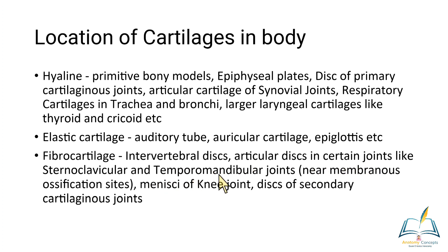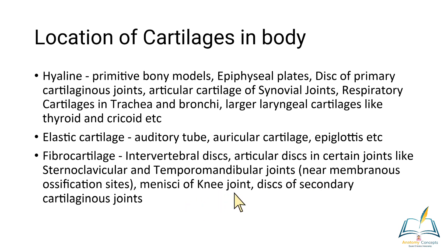Fibrocartilage is observed in the intervertebral disc, articular discs of certain joints like the sternoclavicular and temporomandibular joints — where membranous ossification takes place nearby, if a disc is present it is likely to be fibrocartilagenous. The menisci of the knee joint are also fibrocartilagenous, and the disc of secondary cartilaginous joints is also fibrocartilagenous — the classical example being the intervertebral disc.